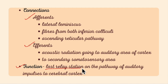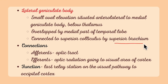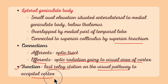Looking at the lateral geniculate body: it is a small oval elevation situated anterolateral to the medial geniculate body, below the thalamus. It is overlapped by the medial part of the temporal lobe and connected to the superior colliculus by the superior brachium. Its afferents are from the optic tract and its efferents are the optic radiation going to the visual area of the cortex. The function of the lateral geniculate body is that it acts as the last relay station on the visual pathway to the occipital cortex.